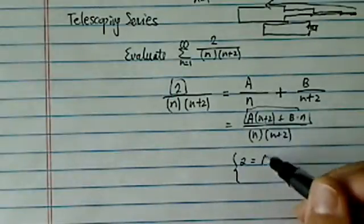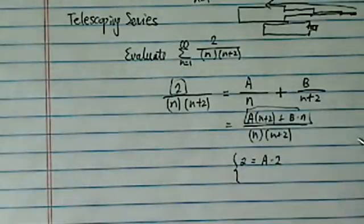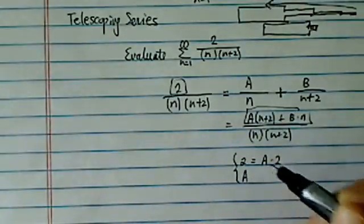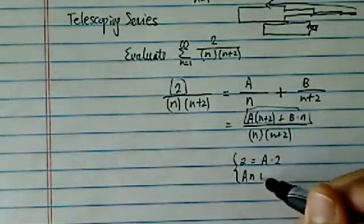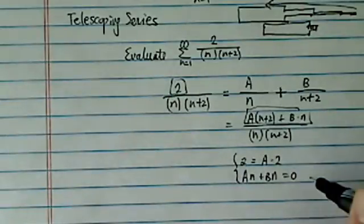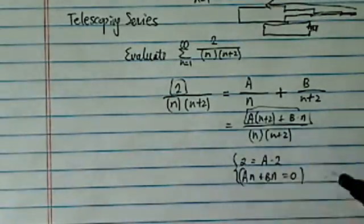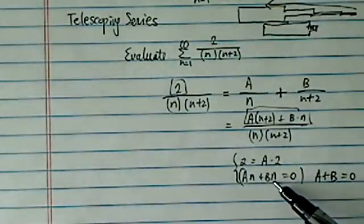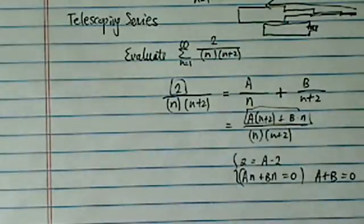And from there we have two equations. We'll have 2 has to equal to a times 2, because that's the term that does not have n in there. Also, a n plus b n, this has to equal to 0. Actually, most of the textbooks you've been dealing with, they'll say a plus b equal to 0. The reason is there's no n term on my left-hand side.